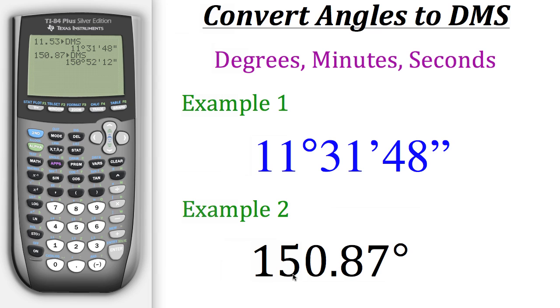And with that, we could see that 150.87 degrees is the same thing as 150 degrees, 52 minutes, and 12 seconds.